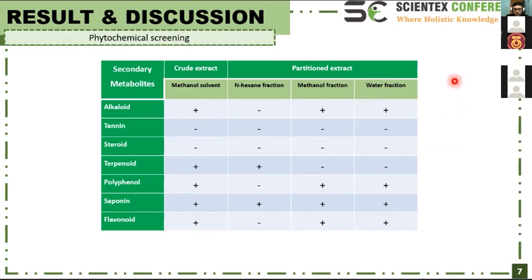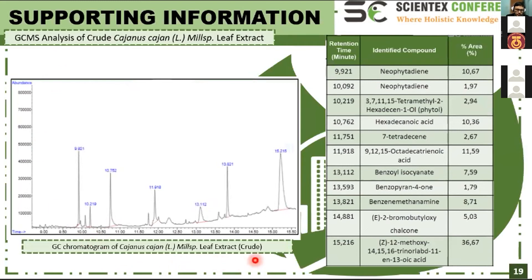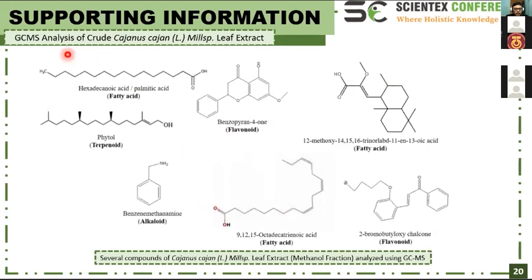We also conducted GC-MS analysis to identify the compounds present. The aqueous extract contains hexadecanoic acid (palmitic acid), benzopyron-4-one, nonoic acid, phytol, benzenemethanamine, octadecatrionic acid, and chalcone. These compounds are also found in some leaf extracts such as Solanum nigrum, Pernoia, and Moringa oleifera.